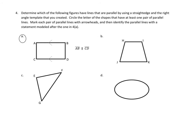Let's take a look at problem 4. Problem 4 asks us, and it's got really long directions, so let's read together. Determine which of the following figures have lines that are parallel by using a straight edge and a right angle template that you created. Circle the letter of the shapes that have at least one pair of parallel lines. Mark each pair of parallel lines with arrowheads, and then identify the parallel lines with a statement modeled after the one in 4A. So let's take a look at what they did in 4A.